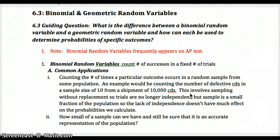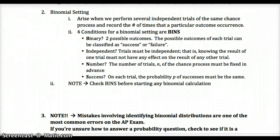We also want to consider how small a sample can be and still accurately represent the population. A binomial random variable arises when we have several independent trials of the same chance process and record the number of times a particular outcome occurs — so we're recording a number of times in a fixed number of trials.